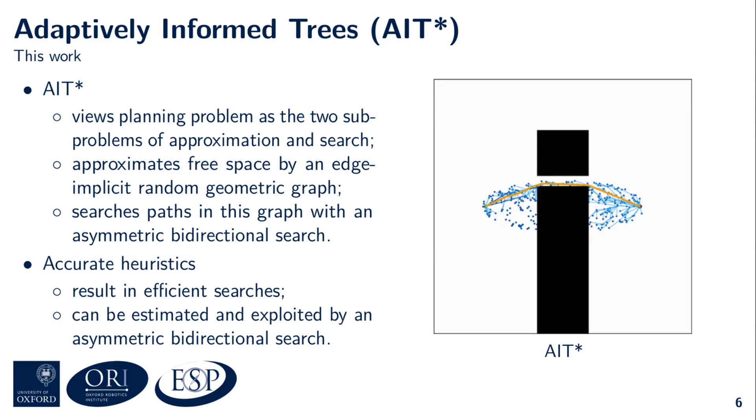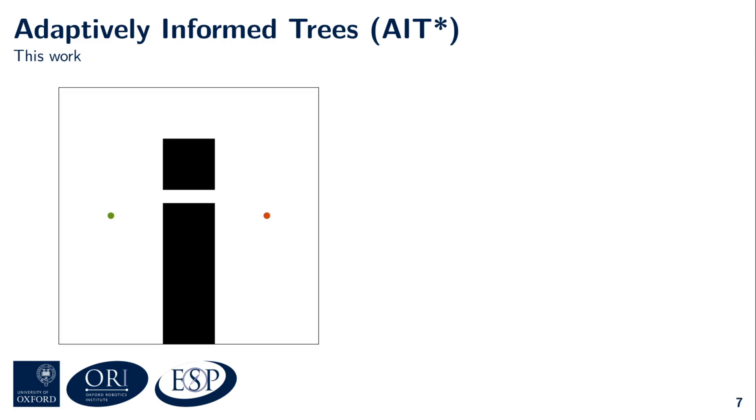Let me now walk you through a step-by-step illustration of AIT*. AIT* begins by creating an approximation of the state space, which it does by sampling a batch of states. In practice, we often use 100 samples per batch, but for the sake of keeping this illustration simple, only a handful of states are sampled here.